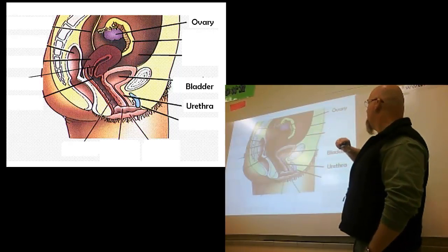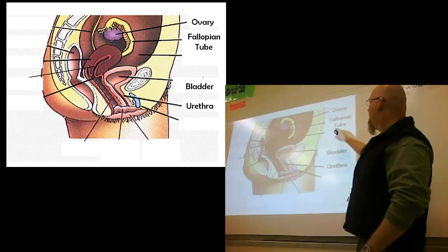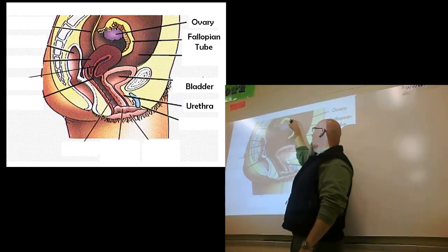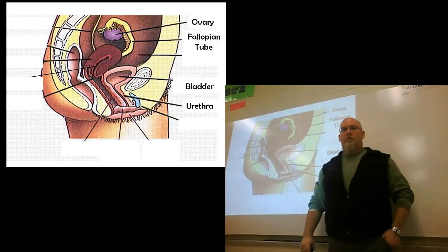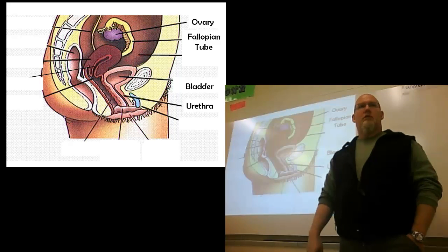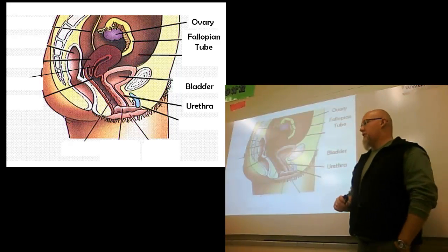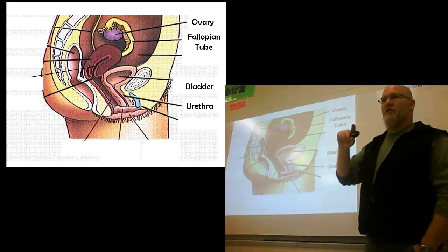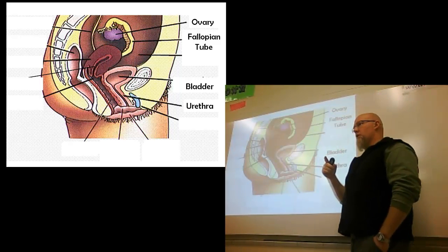Next up, we have the fallopian tube. The fallopian tube. And this tube goes from the ovary all the way around into the uterus. What structure in the male does the fallopian tube a lot like? The vas deferens. It's carrying an egg cell. The fallopian tube carries an egg cell from one place to another. The vas deferens carries a sperm cell from one place to another.